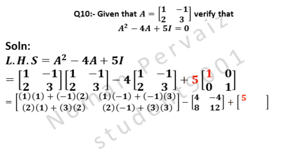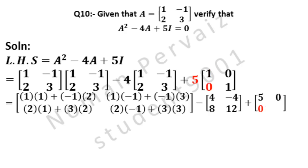5 ones are 5. 5 zeros are 0. 5 zeros are 0. And 5 ones are 5. Is equal to.